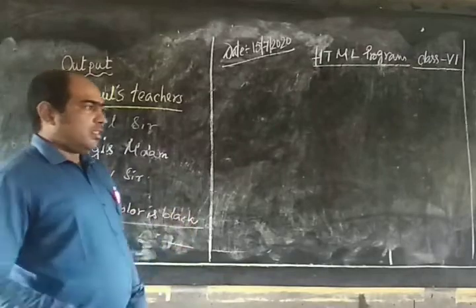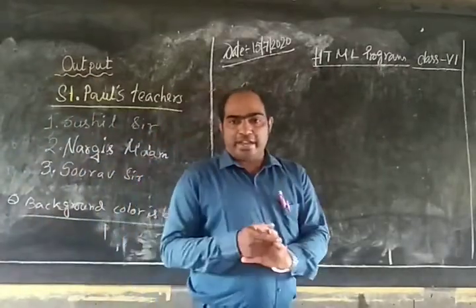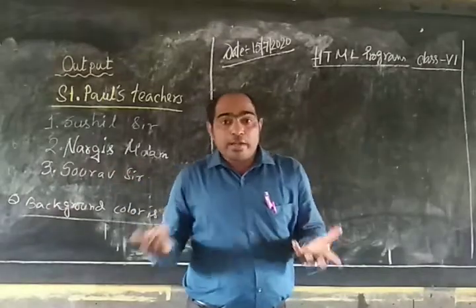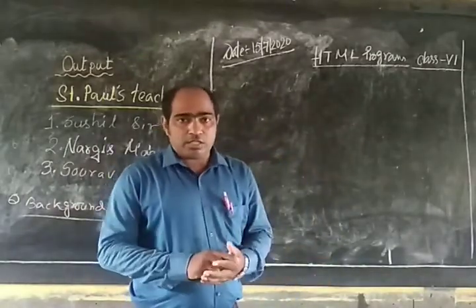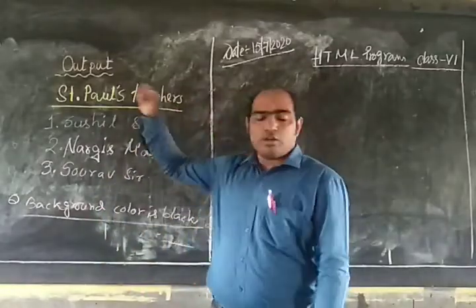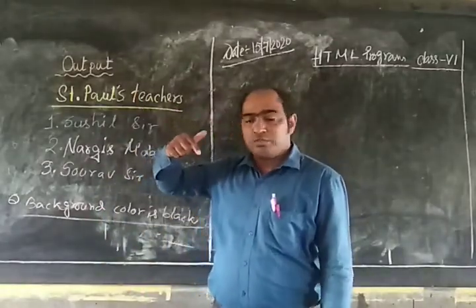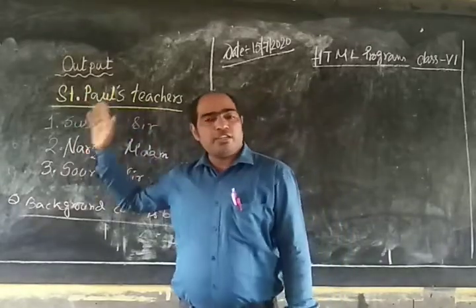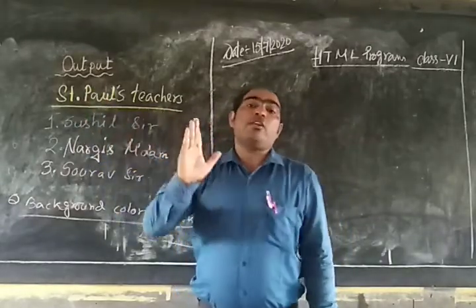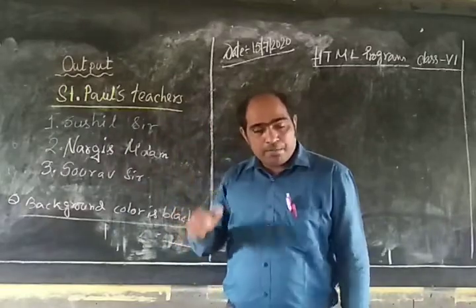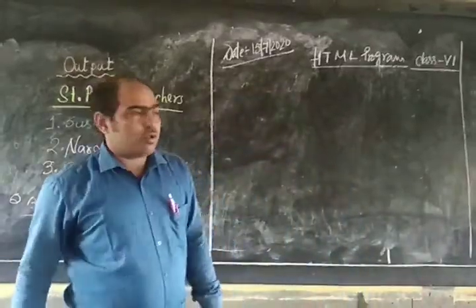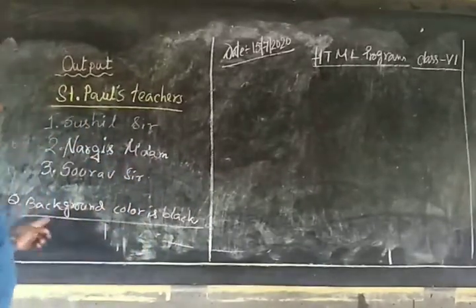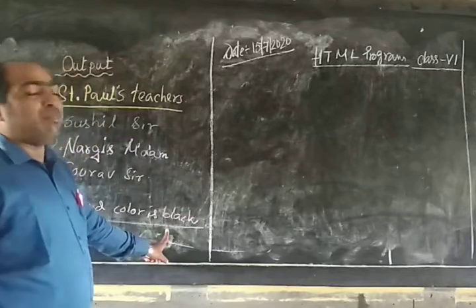If you give only the white color for the text, you cannot see it. Why? Because if the background page is white and the text name is also white color, how can you see? You cannot see. So this is the problem that will come. So you should remember: the text color and background color should not be equal. That's why I have given here background color as black.